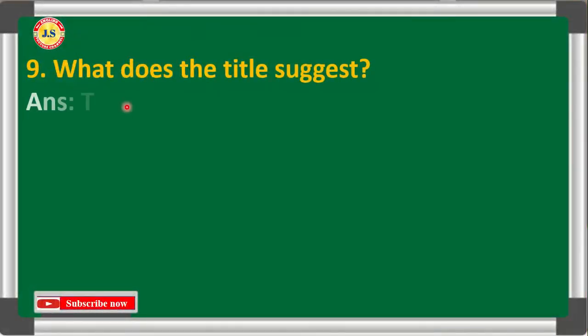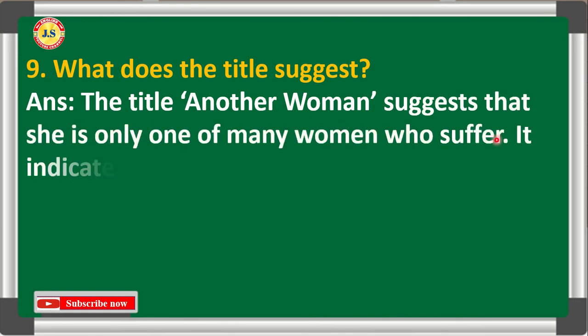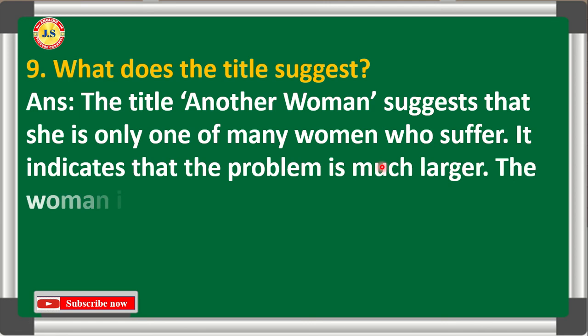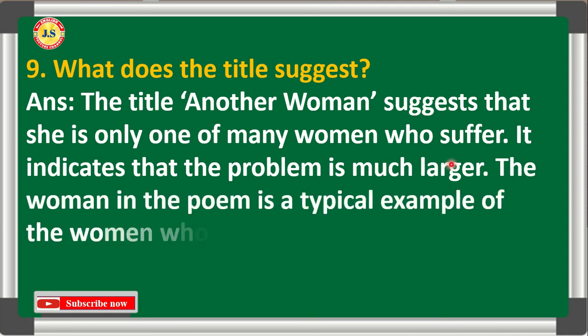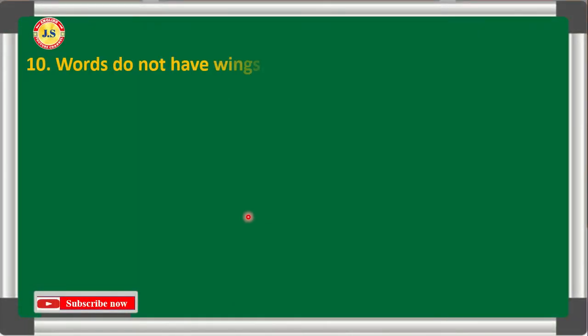Question 9: What does the title 'Another Woman' suggest? Answer: The title 'Another Woman' suggests that she is only one of many women who suffer a lot. It indicates that the problem is much larger. The woman in the poem is a typical example of women subjected to domestic violence — she is not the only one; there are many women who face harassment and domestic violence all over the world.